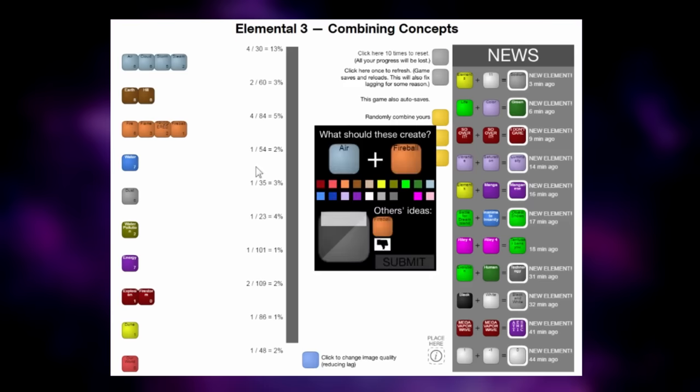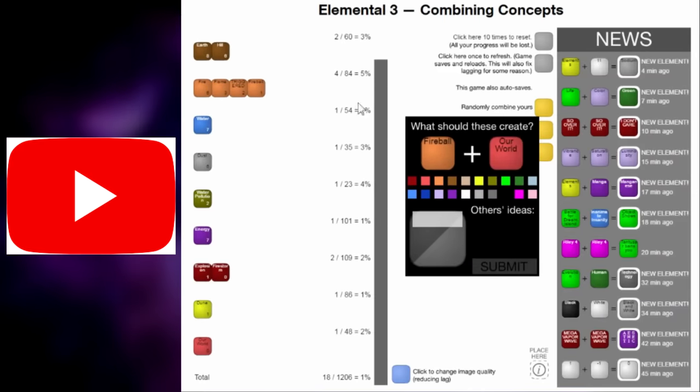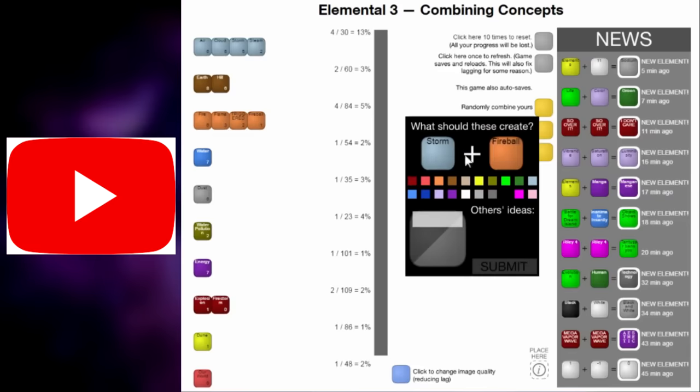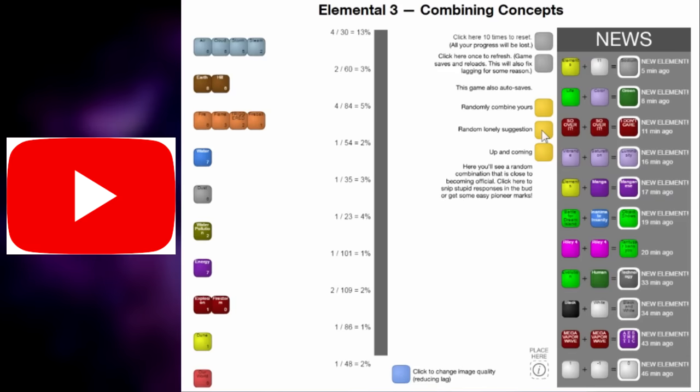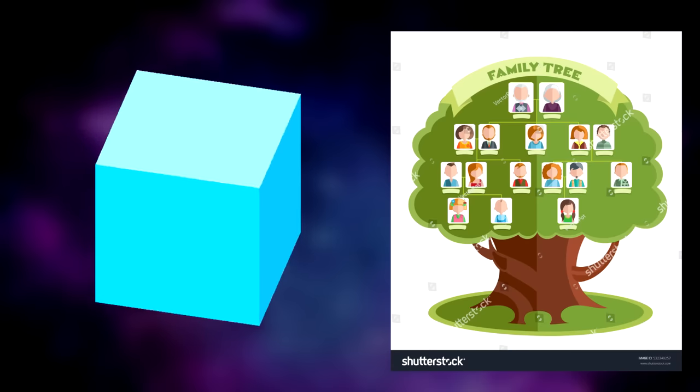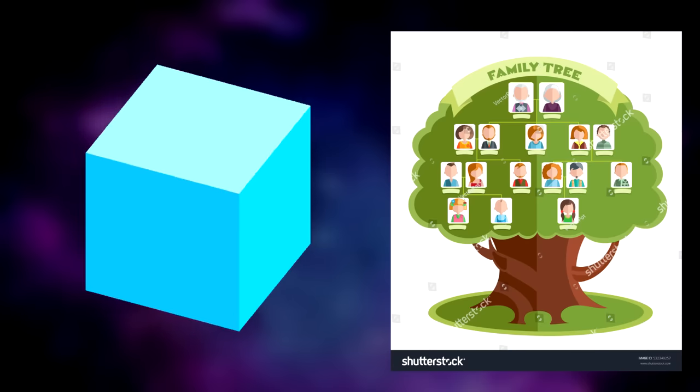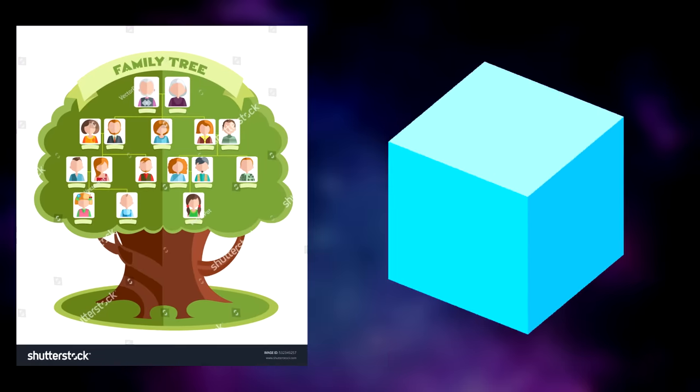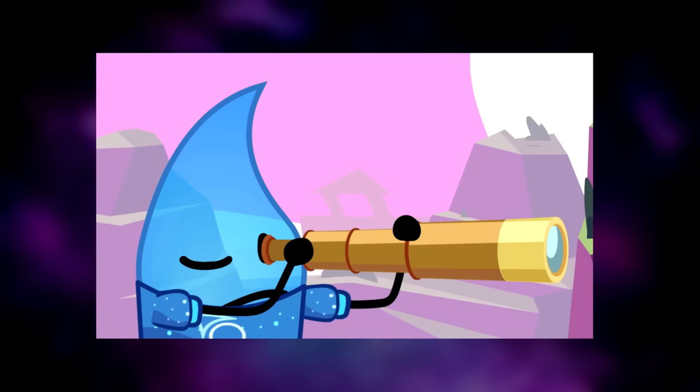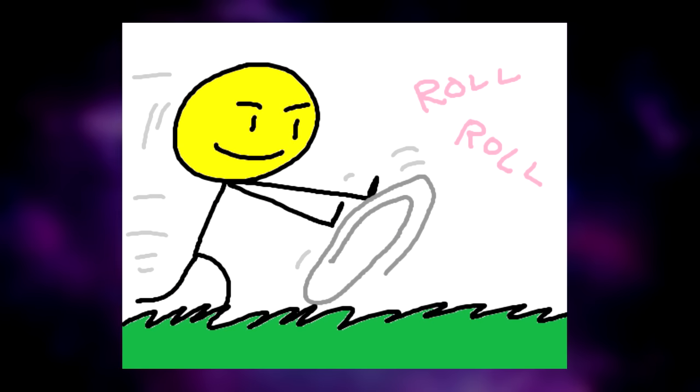But in the meantime, I'd like to use this video to tell the story of how new elements were forged throughout the history of Elemental 3 by using a three-dimensional family tree structure. I don't think this type of data visualization has ever been done before, so you just have to watch to see what I mean. Let's roll the clip.